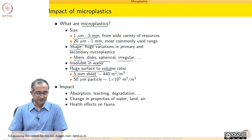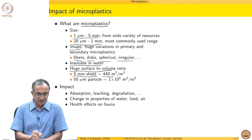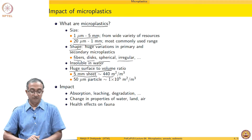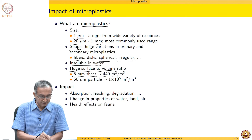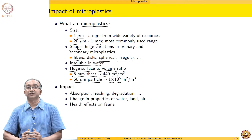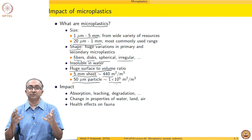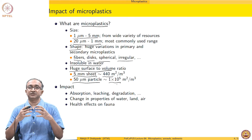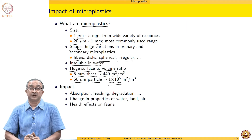Just to give some numbers: a 5-millimeter sheet — the kind of thickness typical for many plastic parts around us — has around 440 square meters per cubic meter of surface area. But just look at what happens if the same polymer is now a 50-micron particle: we are looking at orders of magnitude higher surface area per unit volume. It is through this surface area that interaction with the surrounding happens, whether it is surrounding water, air, or soil particles. Whatever the surrounding, the interaction happens through these interfaces of polymer with the surrounding. We therefore have an extremely large area of interactions between the microplastics and the surrounding.